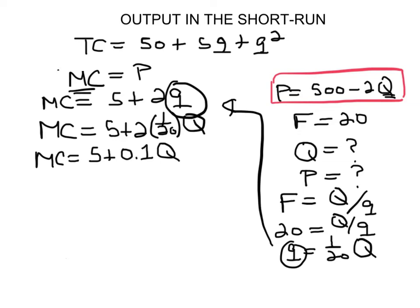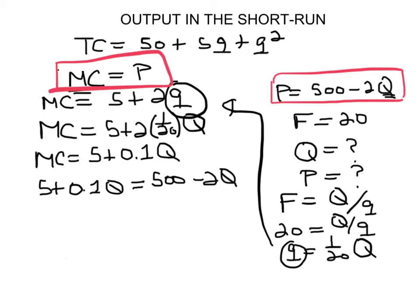And now I can put the marginal cost equal to price, which is what I have here, but now I'm doing it at the market level, essentially. So 5 plus 0.1Q equals 500 minus 2 big Q, and now I have big Q on both sides, so I can actually solve for big Q. So this is 2.1Q, equal to 495, which is going to be equal to 236, that's about it.